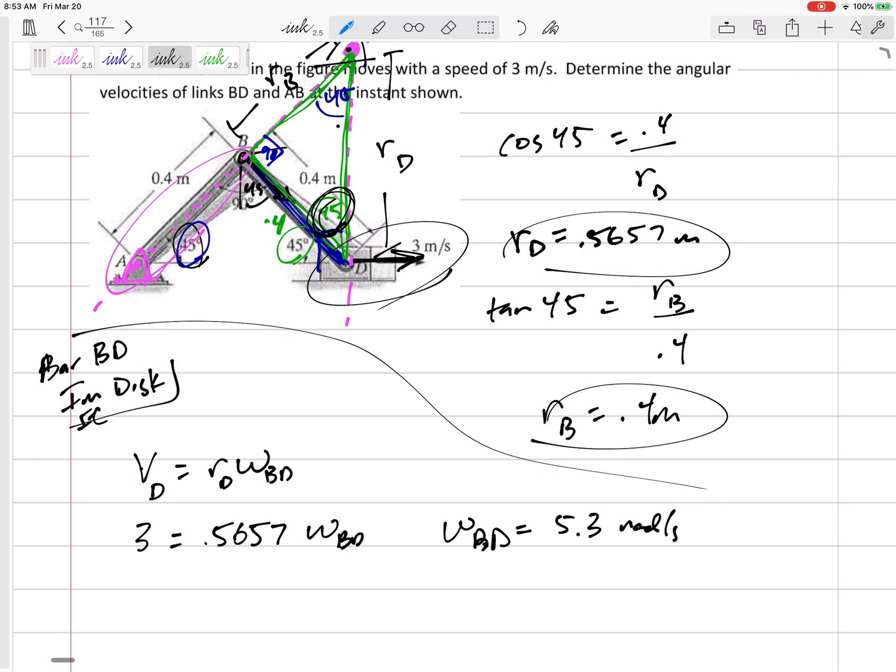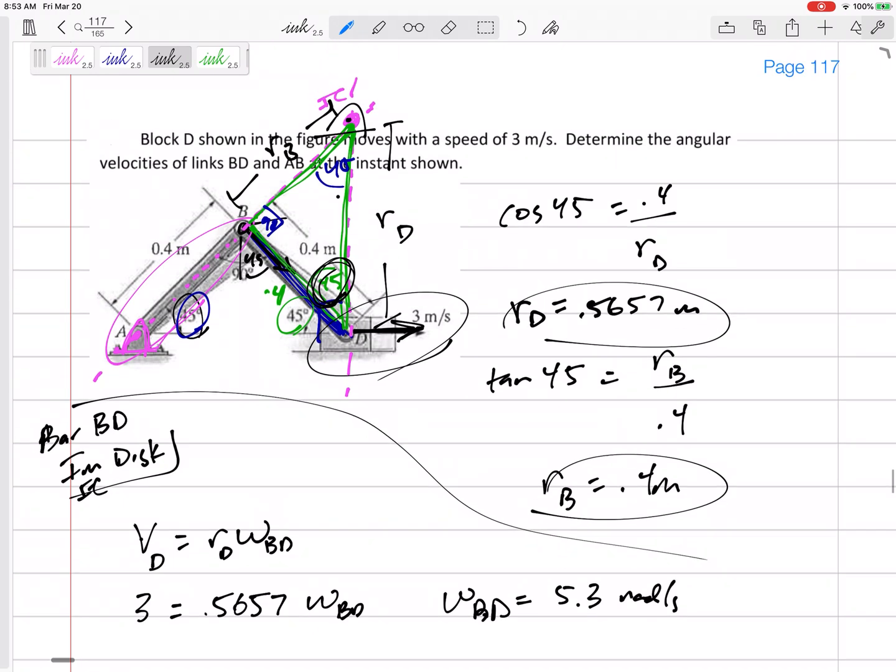Use that to find that the omega of BD is 5.3 radians per second. Now, that's not ever going to come out positive or negative. I mean, you know, it's always going to come out positive. I need to specify, is that clockwise or counterclockwise? Well, if I know that this point is going to the right here, and I know that its center rotation at this instant is up there, then that would mean this imaginary disk is going counterclockwise. So this would be 5.3 radians per second counterclockwise.